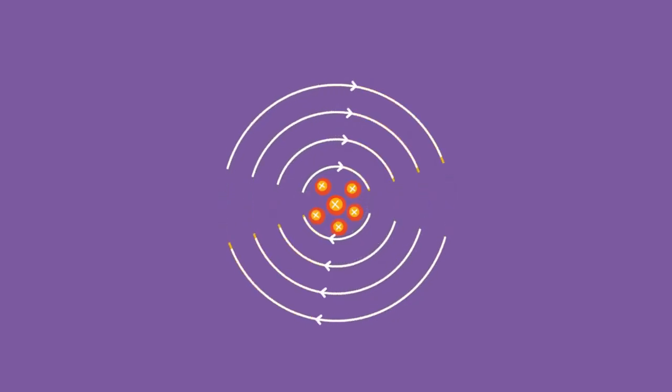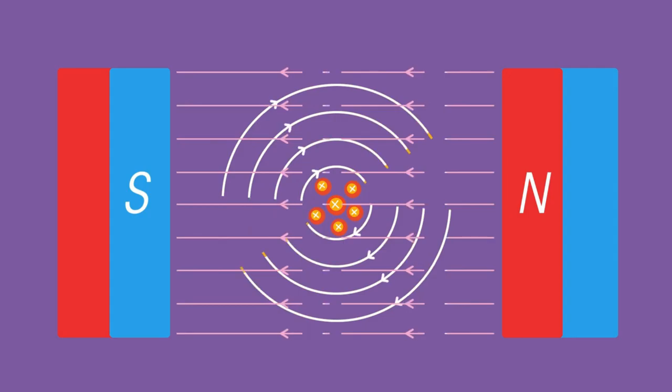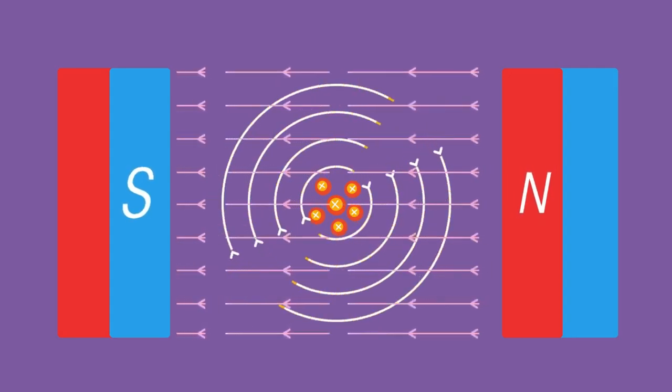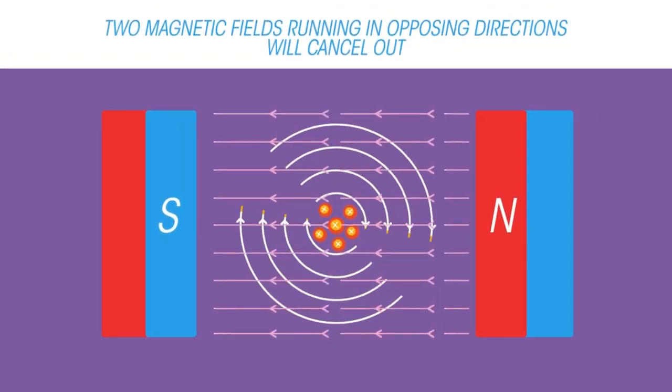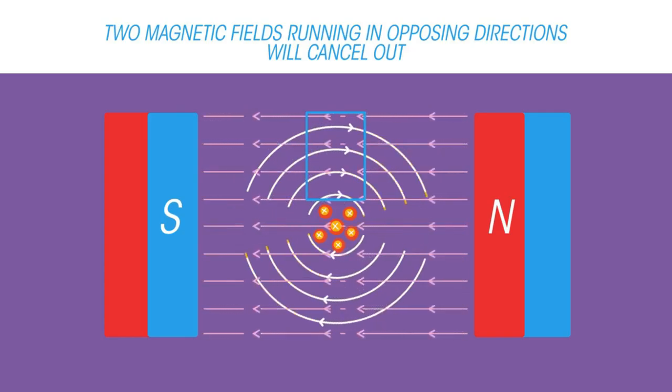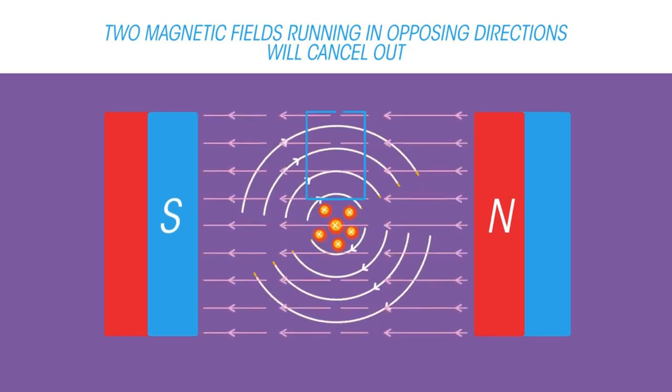Now we can see the permanent magnets and the magnetic field between them running from north to south. These magnetic fields interact. Above the wire, these two fields run in opposite directions and so cancel each other out.